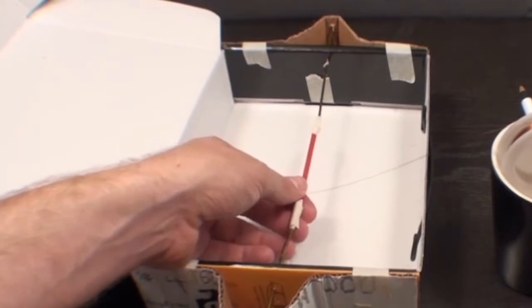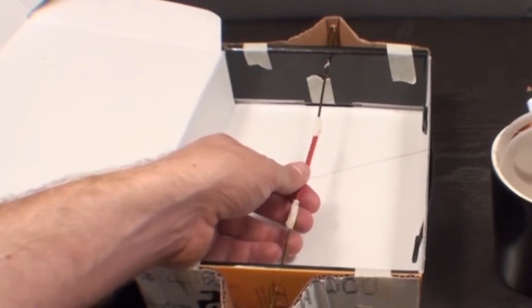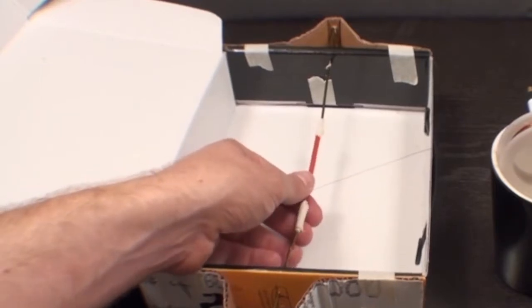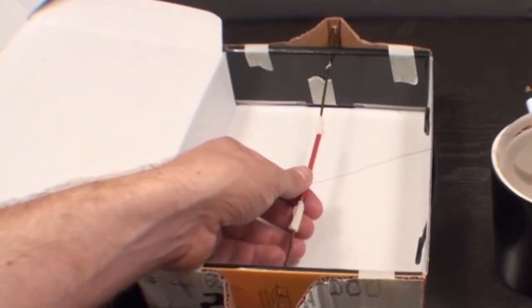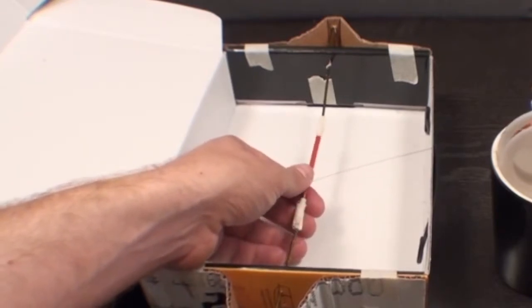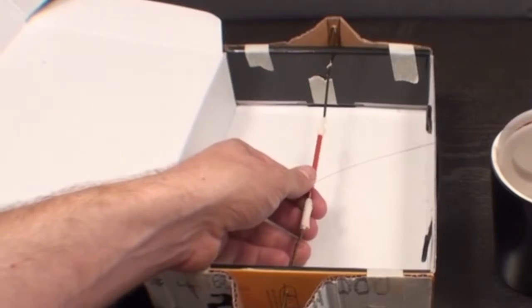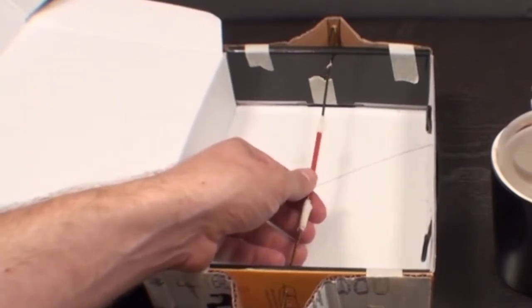You can experiment by just winding a few loops of wire around the straw to see how strong the electromagnet is and then increasing the number of loops to see a change in power. For our purposes today we will be winding several hundred loops layered over each other for maximum power.